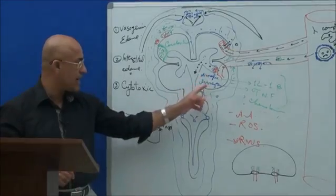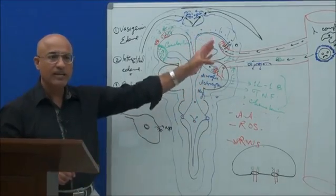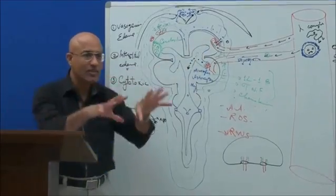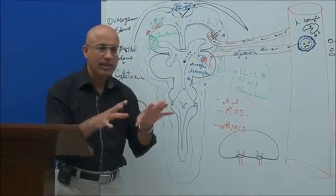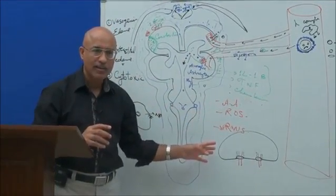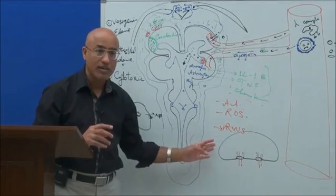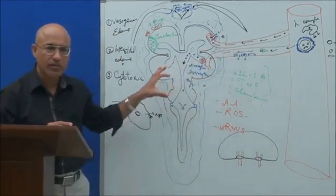Number seven is response by our system, which makes the major damage. Which cells? Microglia, astrocytes, monocytes, and endothelial cells. Number eight is release of cytokines and other toxic products. They damage a lot. Number nine is severe inflammatory response.